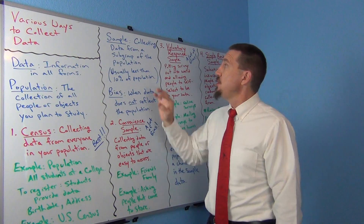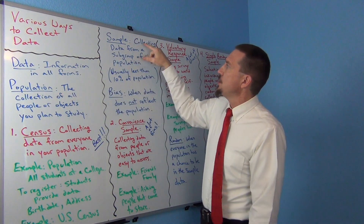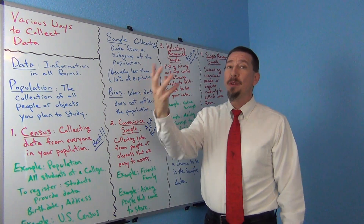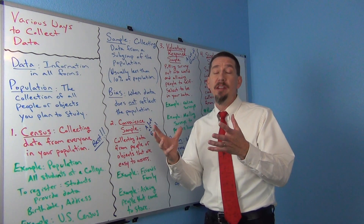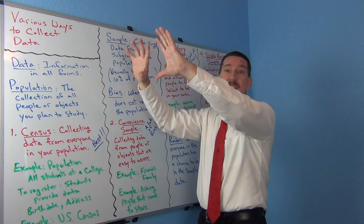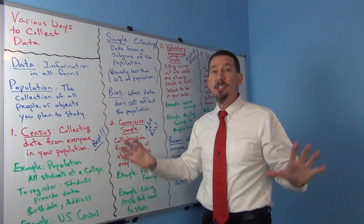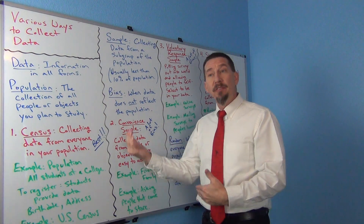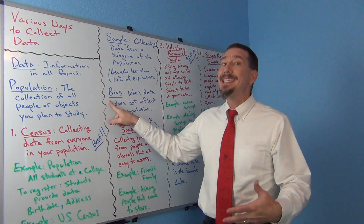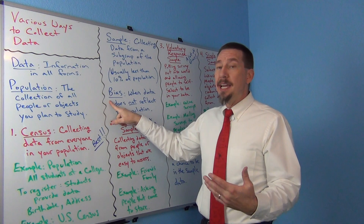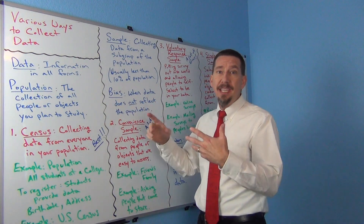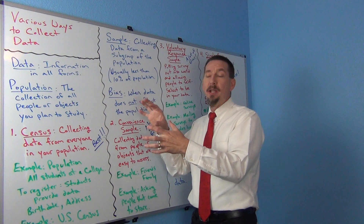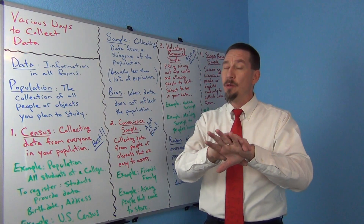A sample is a small subgroup of the population. One of the key things is that the sample needs to reflect the population — in other words, the sample should be representative of the population. After all, we're trying to figure out what's going on in the population. But sometimes when you collect data, it's messed up and not reflective of the population. We call that biased data. If your data does not reflect the population, we say it has bias.